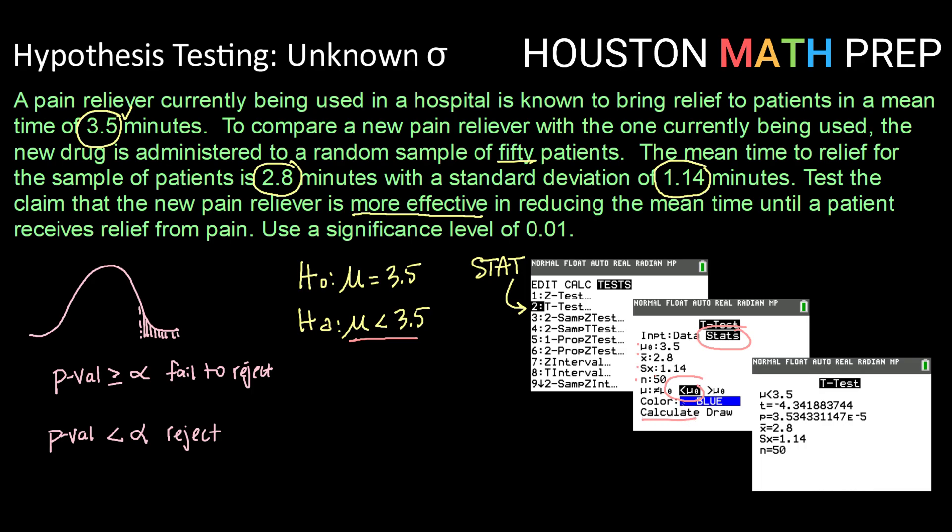When I hit calculate, I am brought up my test statistic. So you could even use this to check your test statistic if you were using the rejection region method. And a p-value. That p-value is what we're looking for here. In this case, our p-value is very, very small because it is 3.53 with e to the negative 5.